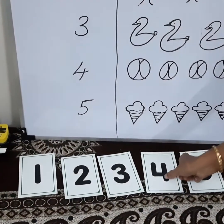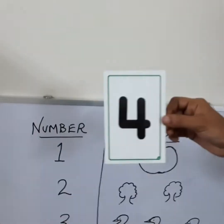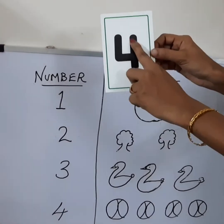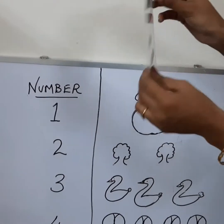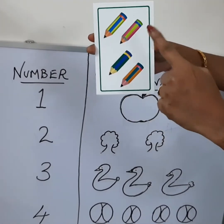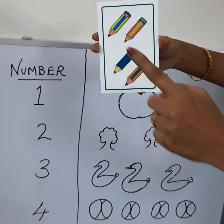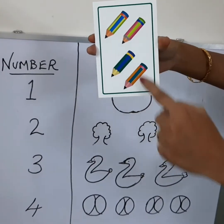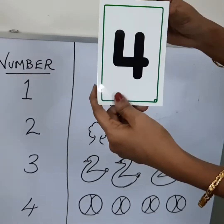What is the next number? Yes! 4. 4 goes like this. Now, pencils. See? Color pencils. 1, 2, 3 and 4. 4 pencils. This is number 4.